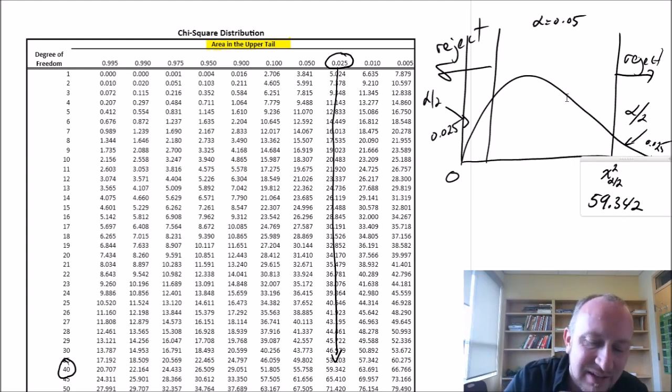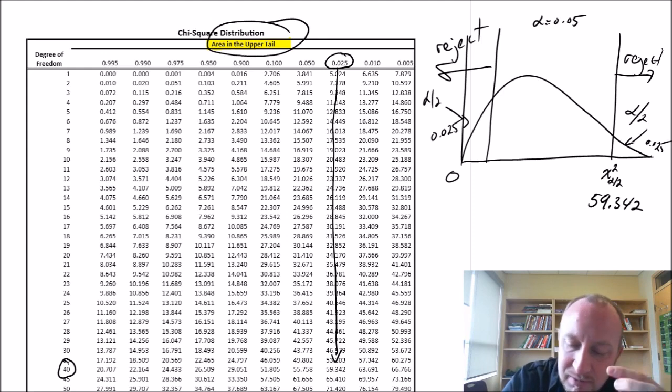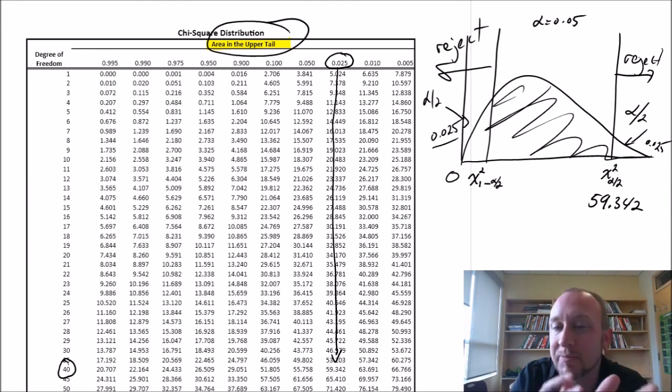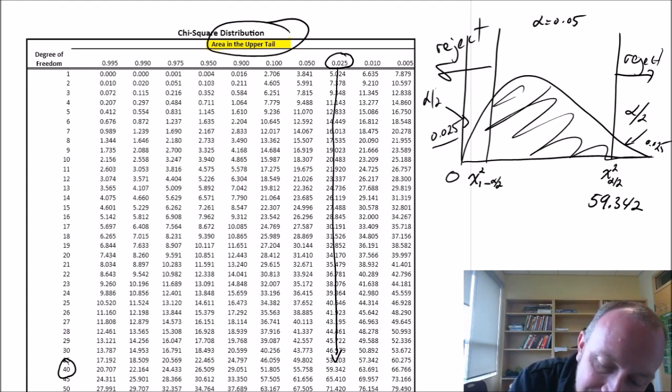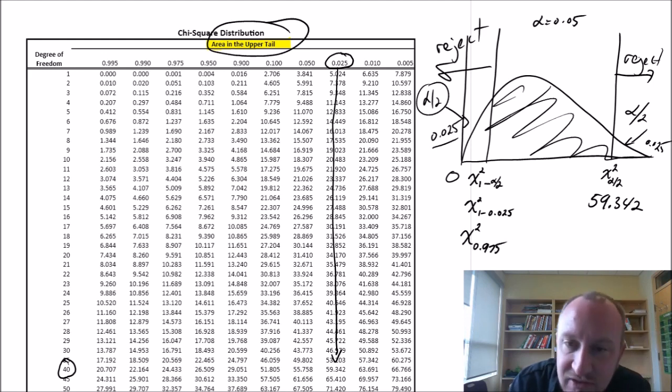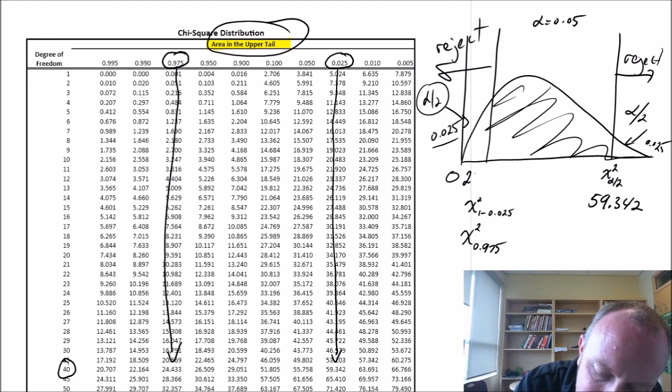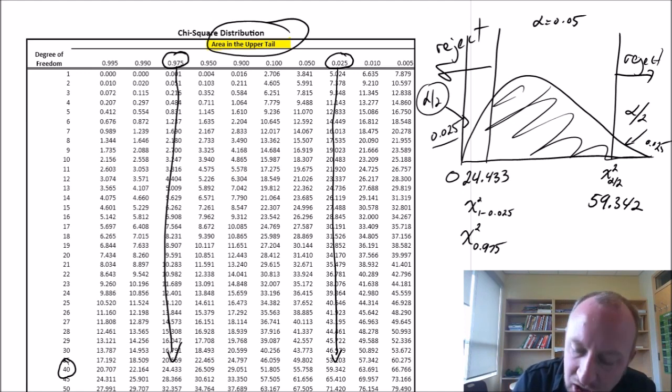Now, the lower tail value is a little bit different to find, again, because of this. If I want 0.025 in the lower tail, then the critical value that I want is the one that corresponds to 1 minus alpha by 2 in the upper tail. So that region in the upper tail is going to be 1 minus alpha by 2, leaving me with alpha divided by 2 in the lower tail. So this is going to be 1 minus 0.025. So this is that critical value that corresponds with 0.975 in the upper tail. So here's that 0.975, and follow this down, and I have, this gives me a lower tail critical value of 24.433.